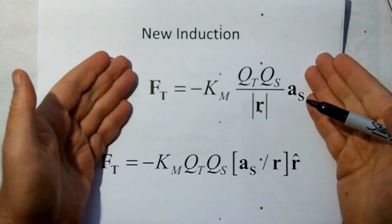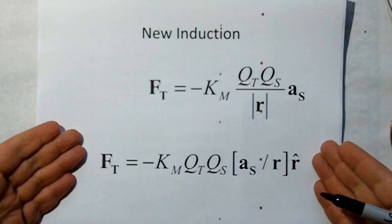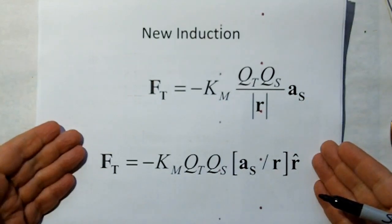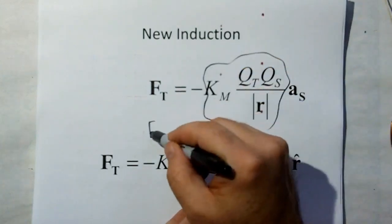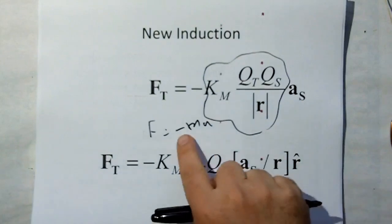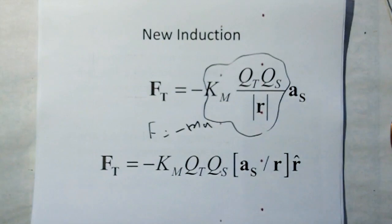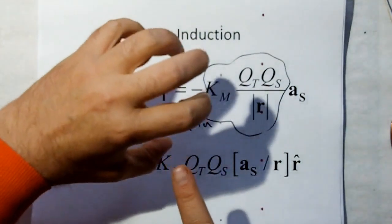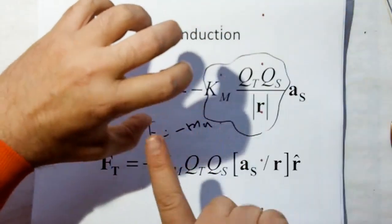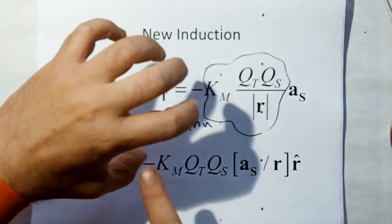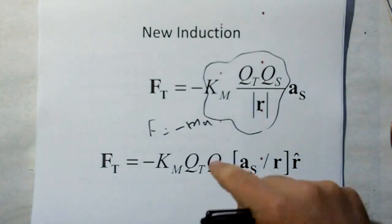This is the New Induction model written in Legacy Vector format, and this is the New Induction model written in Vortrix Algebra Vector format. If you look closely, you see F equals minus M A. What's with the minus sign? Well — inertia. If I apply a force to an object, the inertial force reacting on my finger is going to be the opposite of the direction of accelerating that object. That's the reason for the minus sign — this is inertial force, inertia.